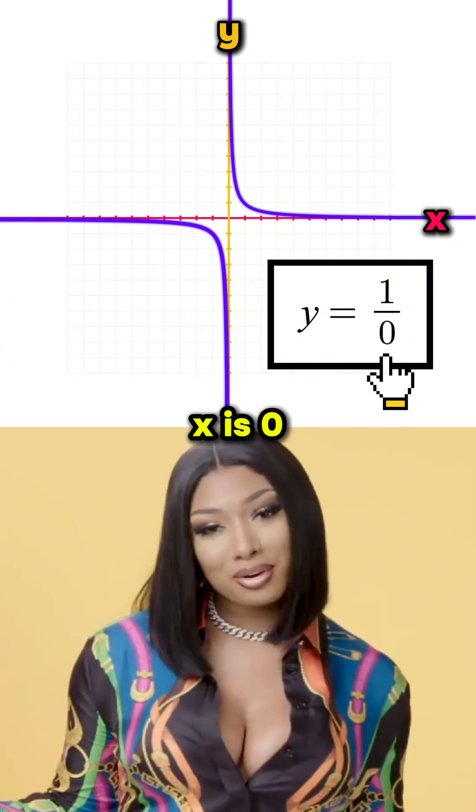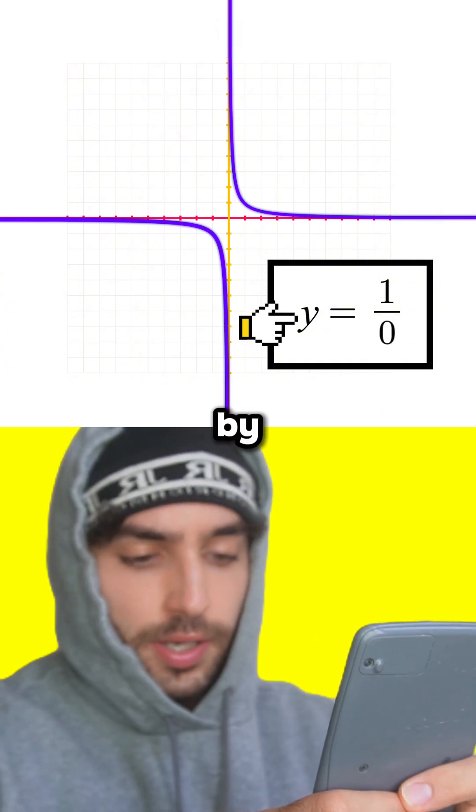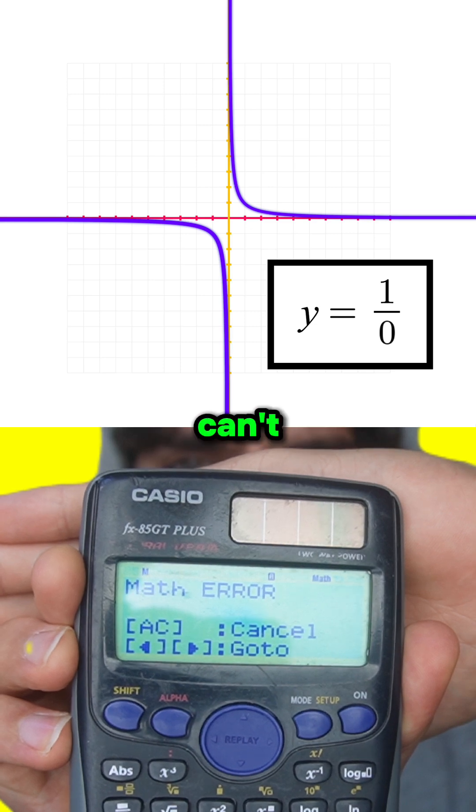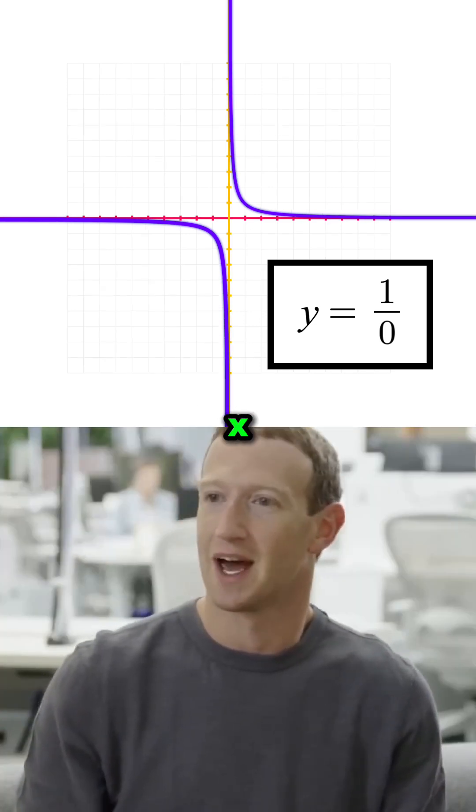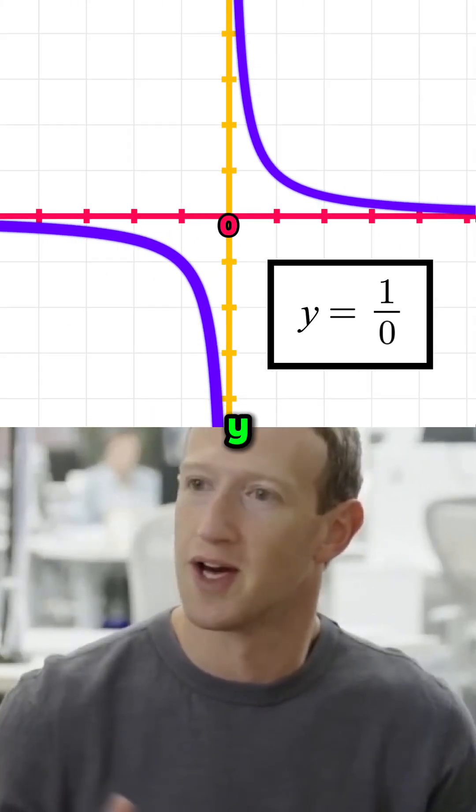Now someone please tell me when x is 0, what does y equal? 1 divided by 0, which is math error. Yep, you can't divide by 0 in math, so where x is exactly 0 on the graph, the y value doesn't exist.